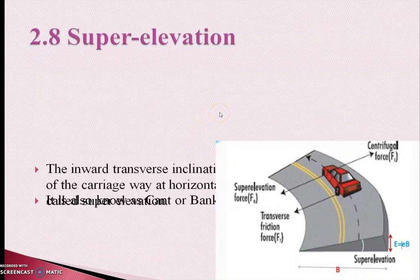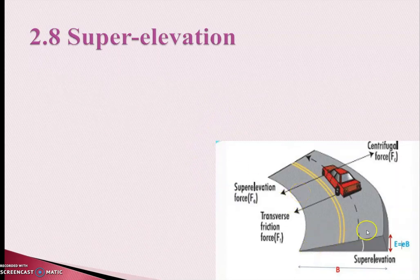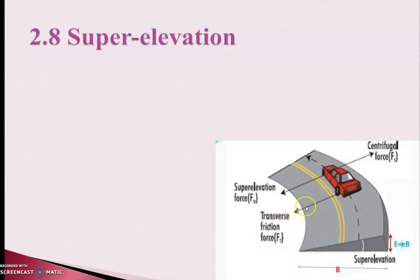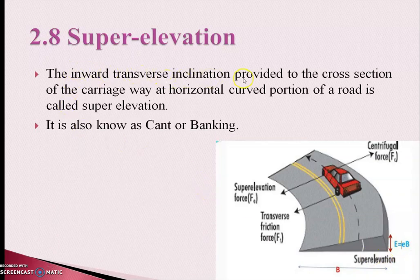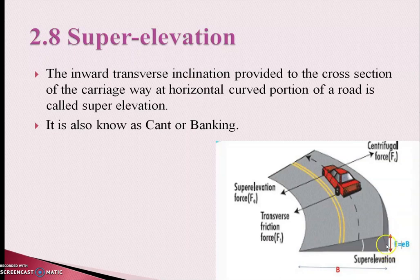Next, we will start with super elevation. As you can see in the image, this is a turning situation where the vehicle is taking a turn towards the left side. While turning, centrifugal force drags the vehicle in the other direction, and transverse friction force also acts. These two forces drive the vehicle in opposite manners. For balancing the weight of the vehicle, the height of the pavement is increased at the turning point towards the outer edge, and that height is called super elevation. So it is an inward transverse inclination — the left edge is at zero elevation and the right edge is at a particular value E. The transverse inclination provided to the cross section of the carriageway at the horizontal curved portion of a road is called super elevation. It is also known as Kant or banking.